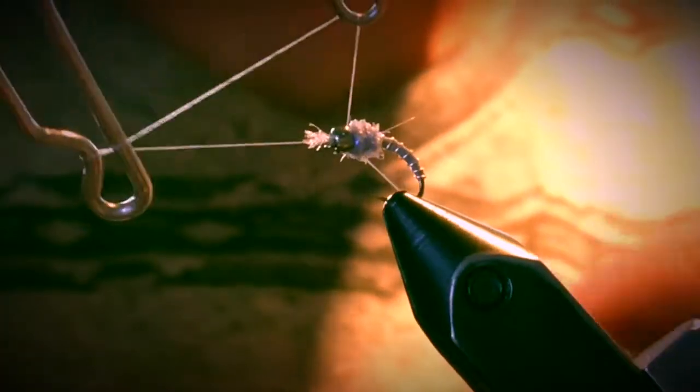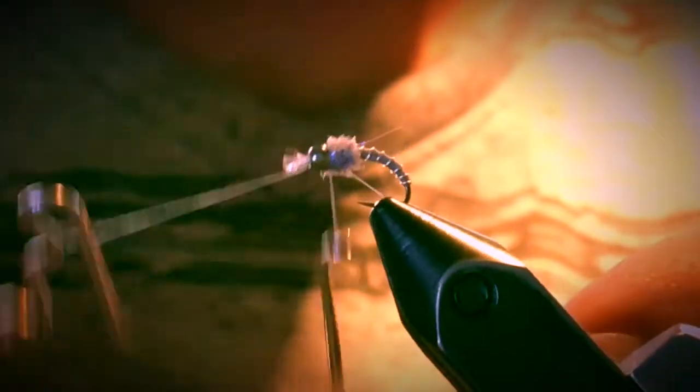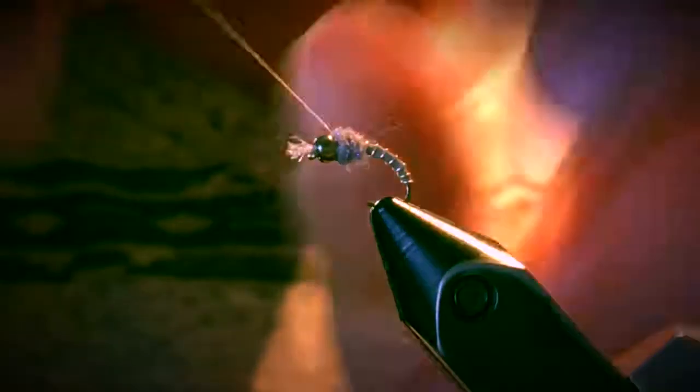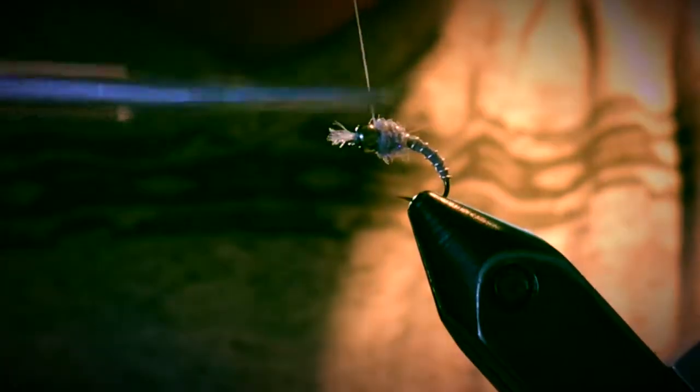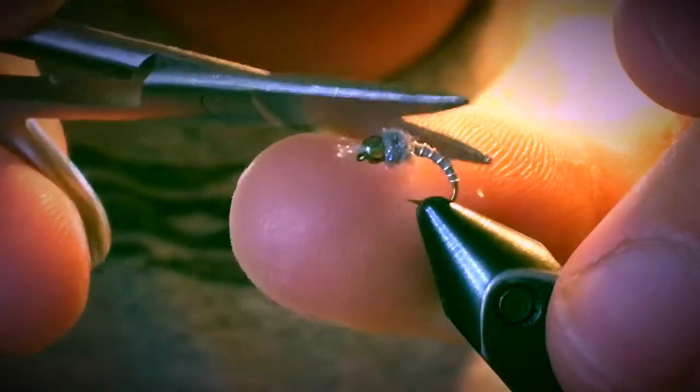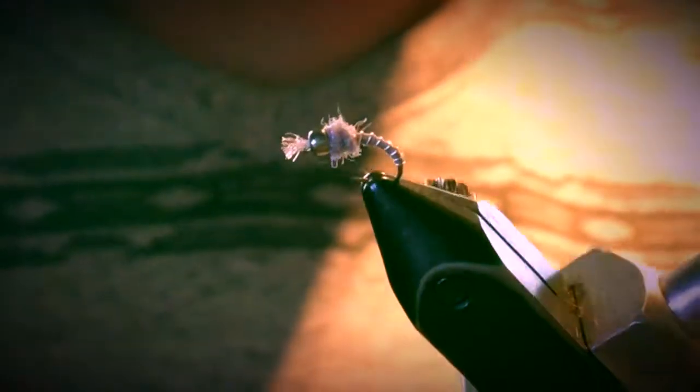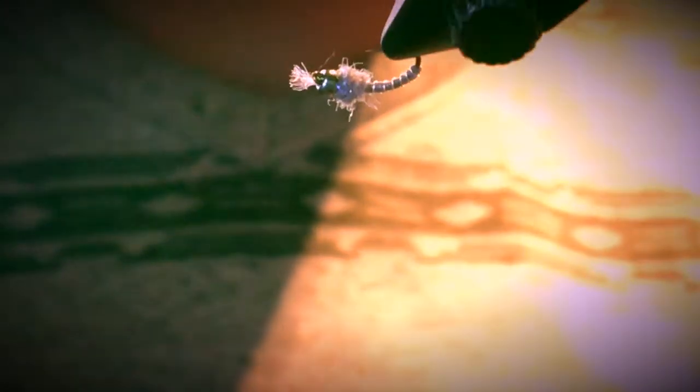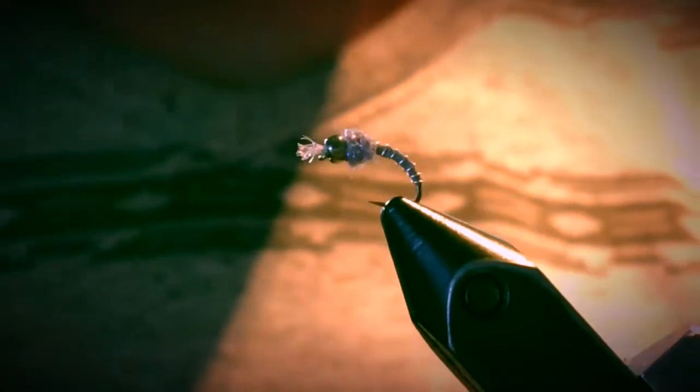Then whip finish. You can add a little bit of glue or whatever if you don't want the thread to unwrap, but it should be fine. Now just pull these fibers and get any stragglers. There it is, a very simple and very effective midge pupa pattern.